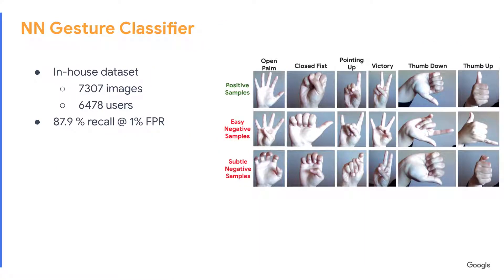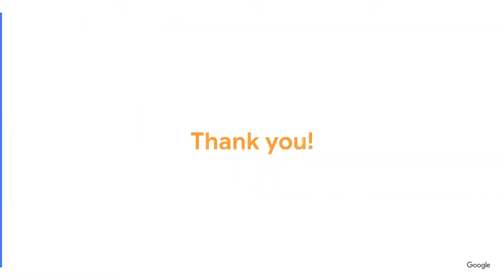We mined another in-house dataset with a variety of hand shapes to train a neural network for 6 hand gestures. The subtle negative examples from different users help determine the decision boundary of the classifier, which has a recall of 87.9% at 1% FPR. Thank you.